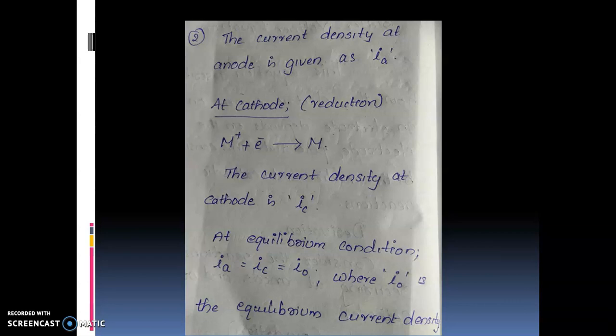i0 is the equilibrium current density. The current density generated under equilibrium conditions is i0. At equilibrium, the anodic current and cathodic current are equal.